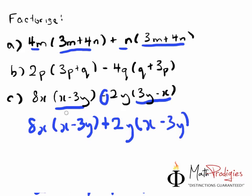And now we have achieved the thing of making this look the same. So now the same thing, X minus 3Y, pick it out. Now you have 8X plus 2Y.